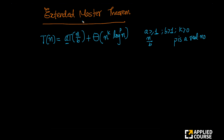If you have this form and can remember the extended Master's Theorem formulas, you can solve recurrences much faster. The big change from the traditional Master's Theorem is this log^p(n) part. So let us write each of the cases. Case 1: